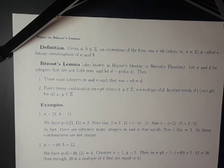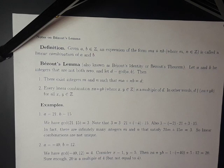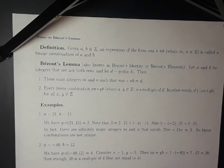If a equals negative 40 and b equals 12, the GCD of negative 40 and 12 is 4. I can make whatever linear combination I want. For example, if I let x equal 1 and y equal 5, then xa plus yb equals 1 times negative 40 plus 5 times 12, which is 20. Sure enough, 20 is a multiple of 4, but not equal to 4. So the second part of Bezout's lemma says that whenever I make a linear combination of a and b, I might not get the GCD, but I will get at least a multiple of the GCD.